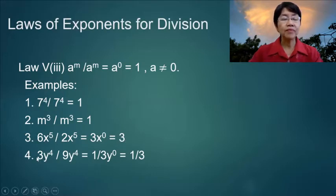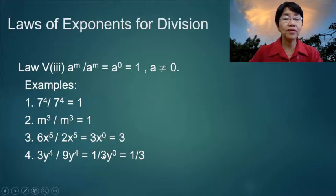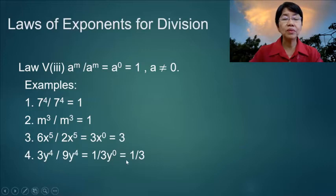Number 4: 3y to the 4th over 9y to the 4th. Since 3 over 9 is equal to 1 third, and y to the 0 equals 1, the answer is simply 1 third.